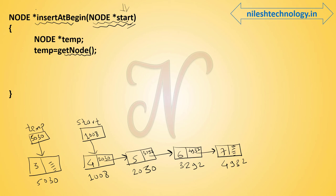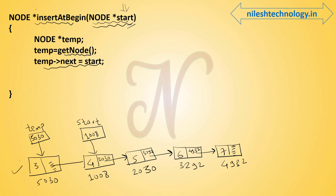Now this temp node is to be inserted at the beginning of the linked list. The next line of code is: temp->next = start. Currently temp->next is null, so we assign temp->next equal to start. Since start is pointing to address 1008, temp->next now points to address 1008.